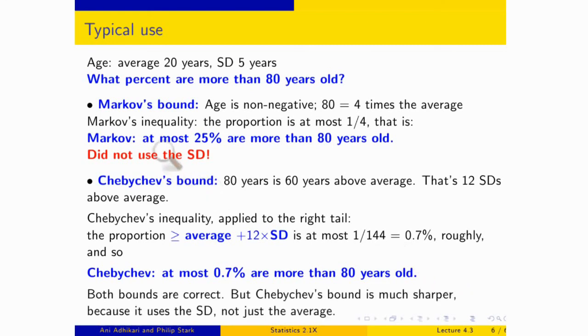Both bounds are correct. Markov says the proportion is no more than 25%. He's right. Chebyshev says, but in fact, it's no more than 0.7 of a percent. And he can be a lot sharper because he is using the SD as well, not just the average. And the SD is a measure of spread. The measure of spread is exactly what you need to figure out what's going on in the tails, in the extremes of the data.